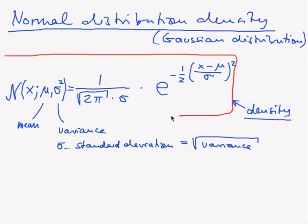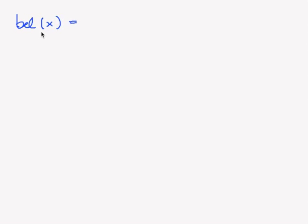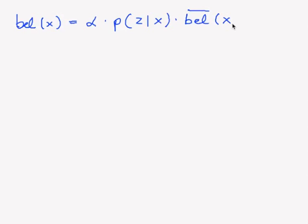This density plays a major role in modeling probabilities in this course as well as in general. Now let's have a look at the second step in our Bayes filter. Our new belief was some normalization constant times the probability of measuring c when we are at x, times our predicted belief — with an overline — that we are in x. We will now model all those beliefs using normal distributions.